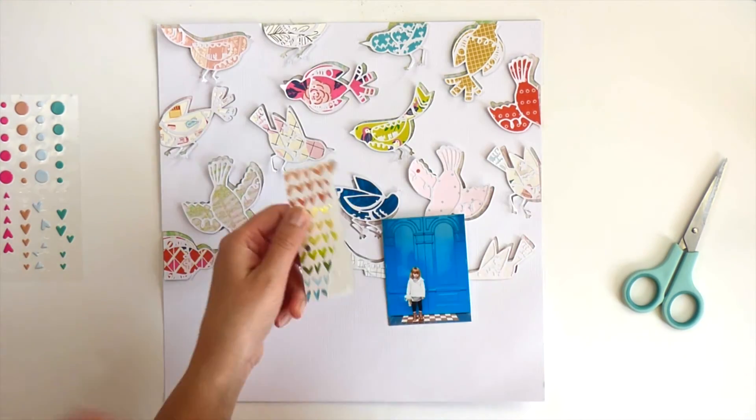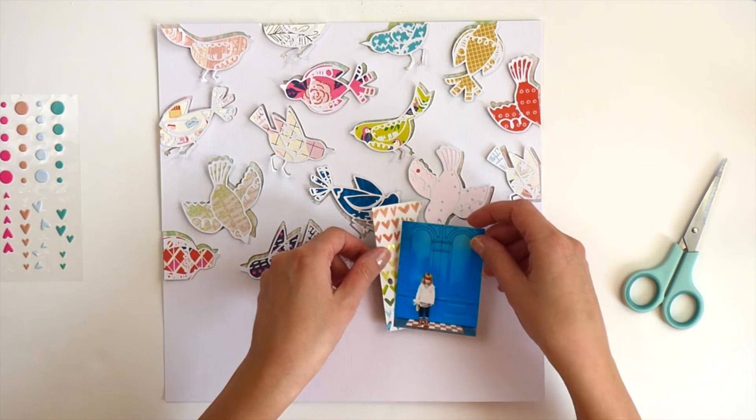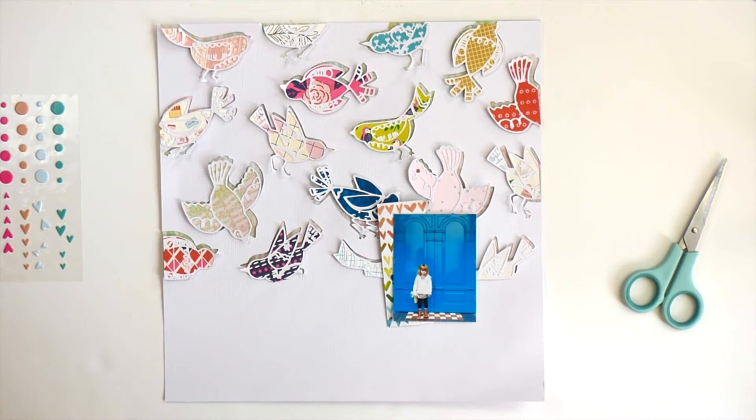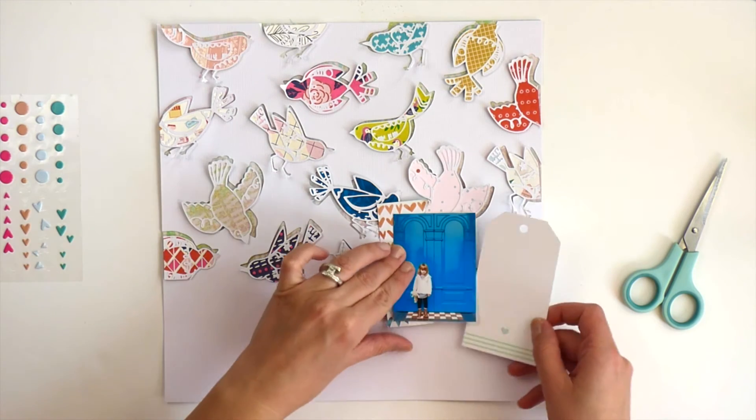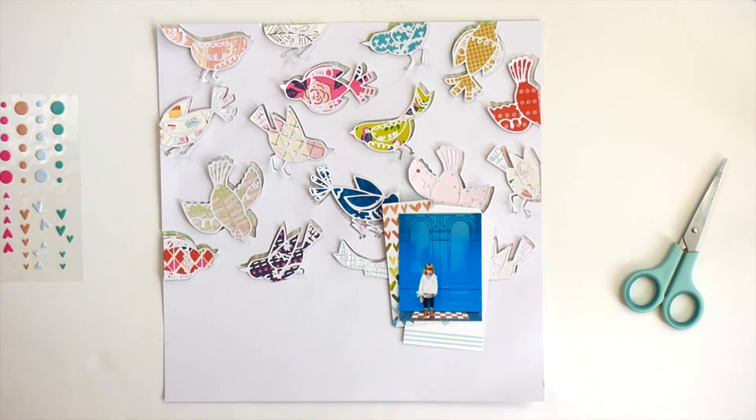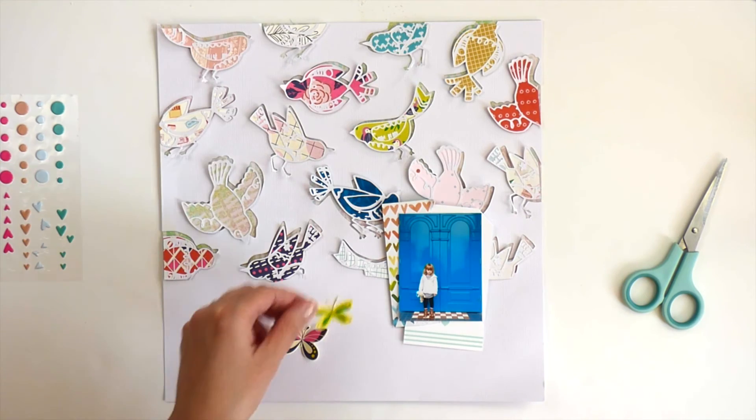So here's the photo that I'm using. And I'm just going to create a photo cluster so that the eye is drawn right into this photo. So I tore off a little piece of that colorful heart card and tucking under a tag.